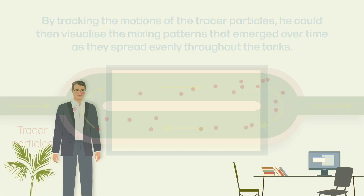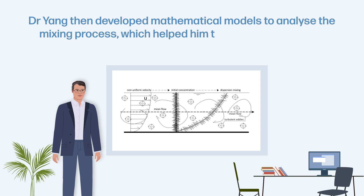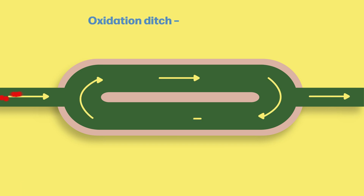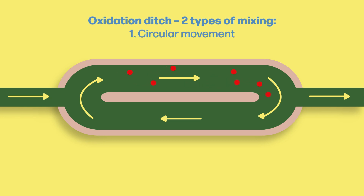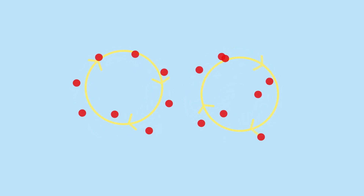Based on this data, Dr. Yang developed mathematical models to analyse the mixing process, which helped him understand how the CSTBR mode emerges in both types of tank. In oxidation ditches, it involves two separate types of large-scale mixing occurring simultaneously: the circular movement of fluid particles along a closed loop, and the dispersion of particles at constant speeds. In contrast, the CSTBR mode in aeration tanks is only characterised by dispersion. In each case, the CSTBR mode emerges when mixing patterns are combined with the random, small-scale diffusion of swirling eddies.